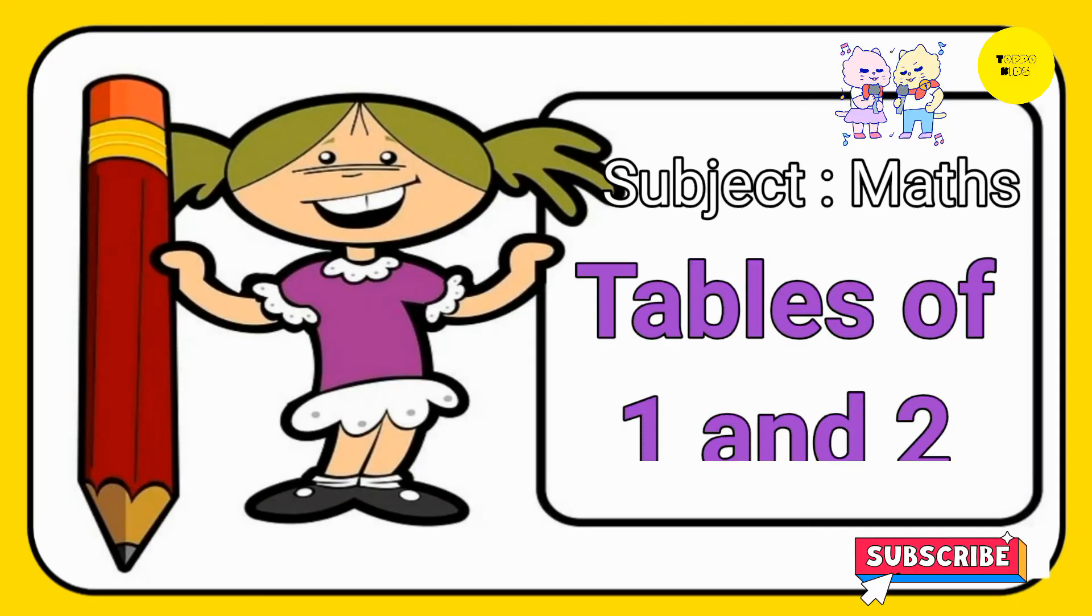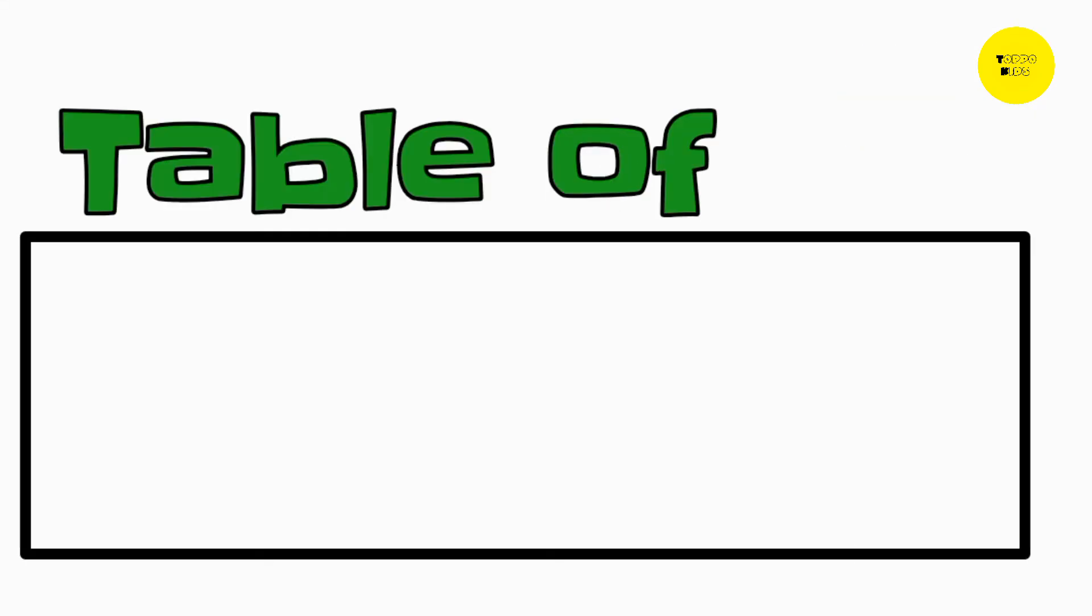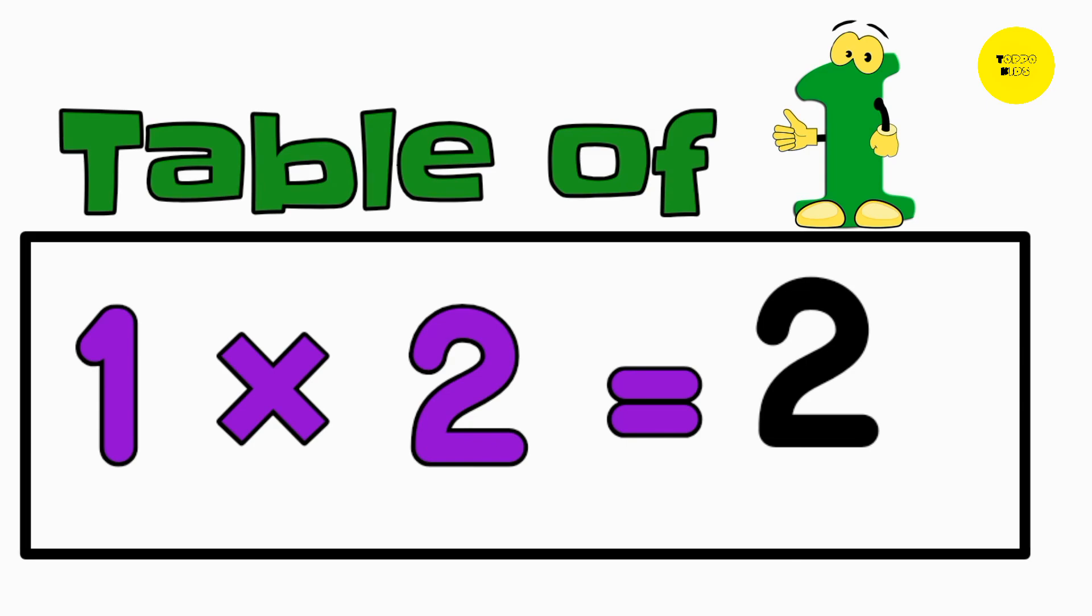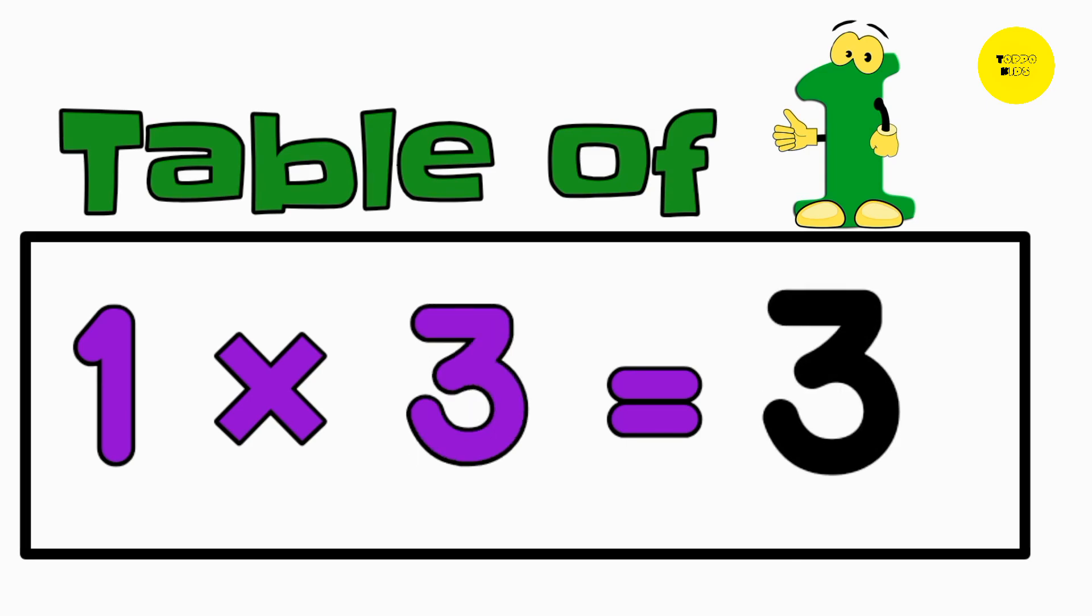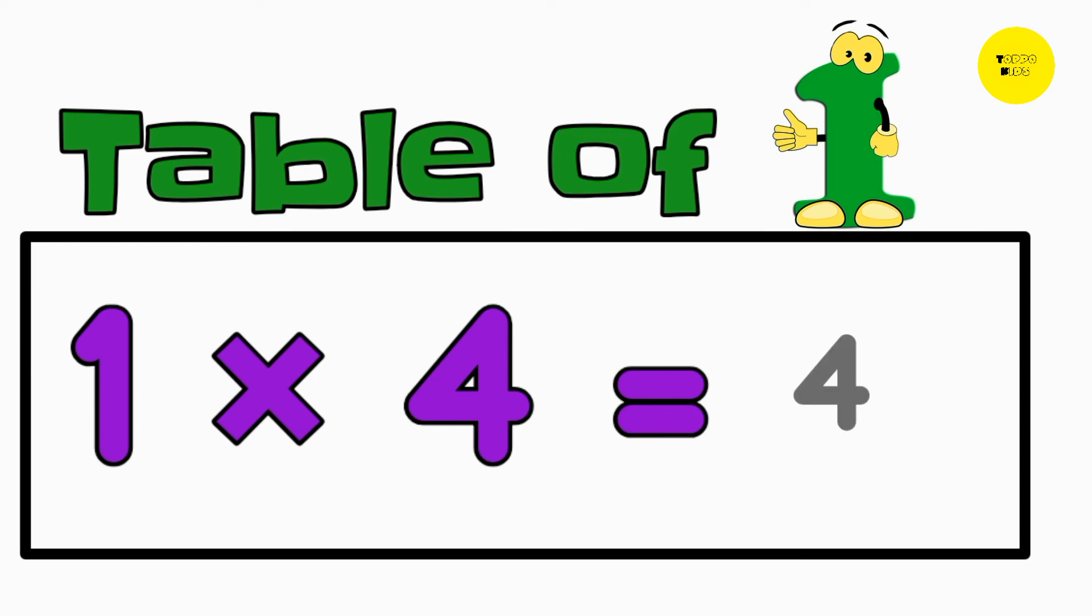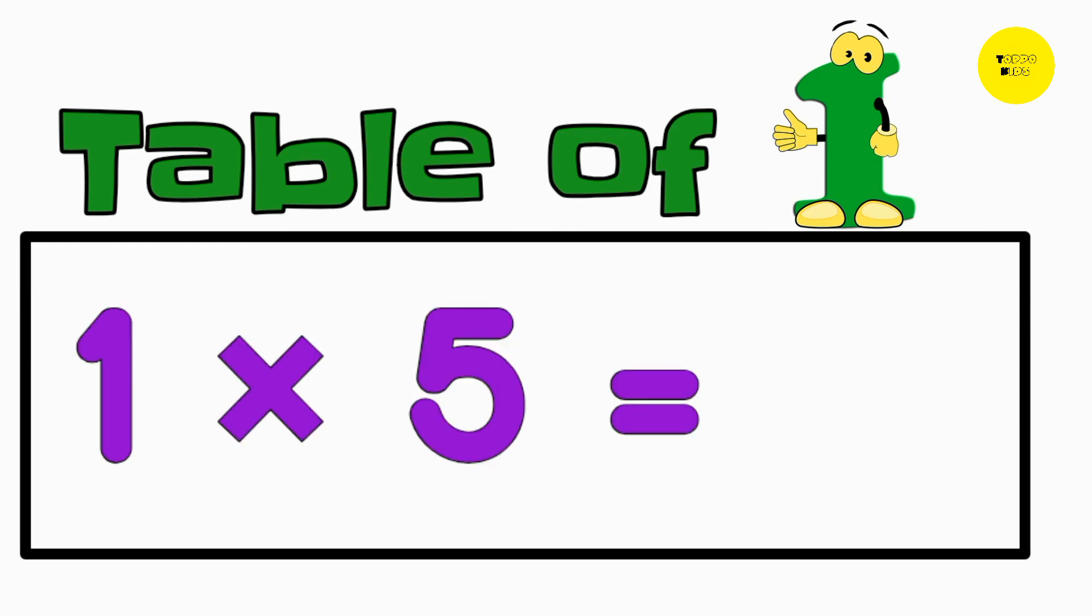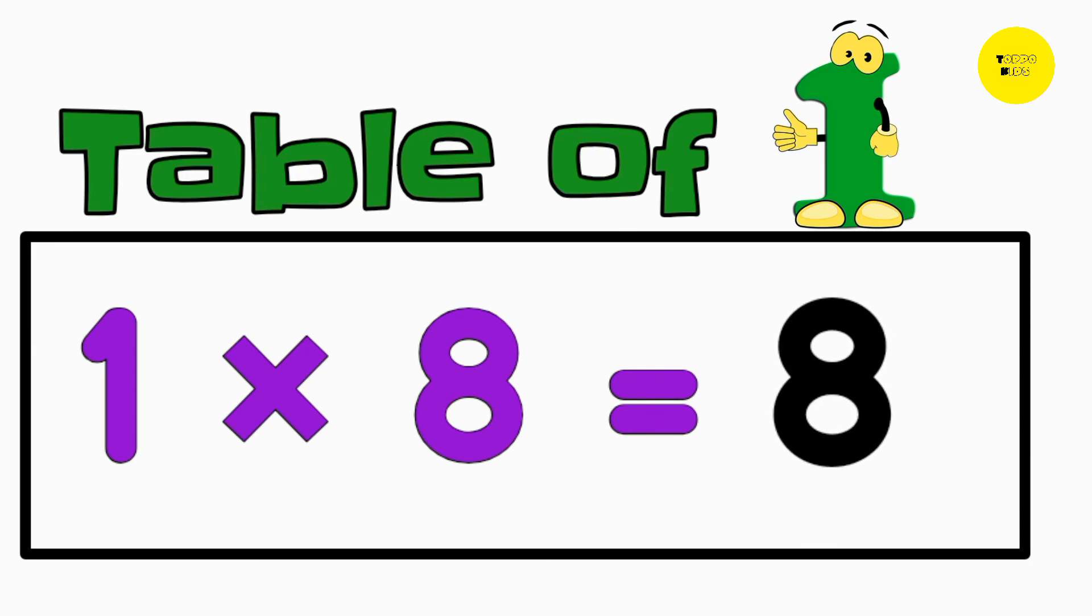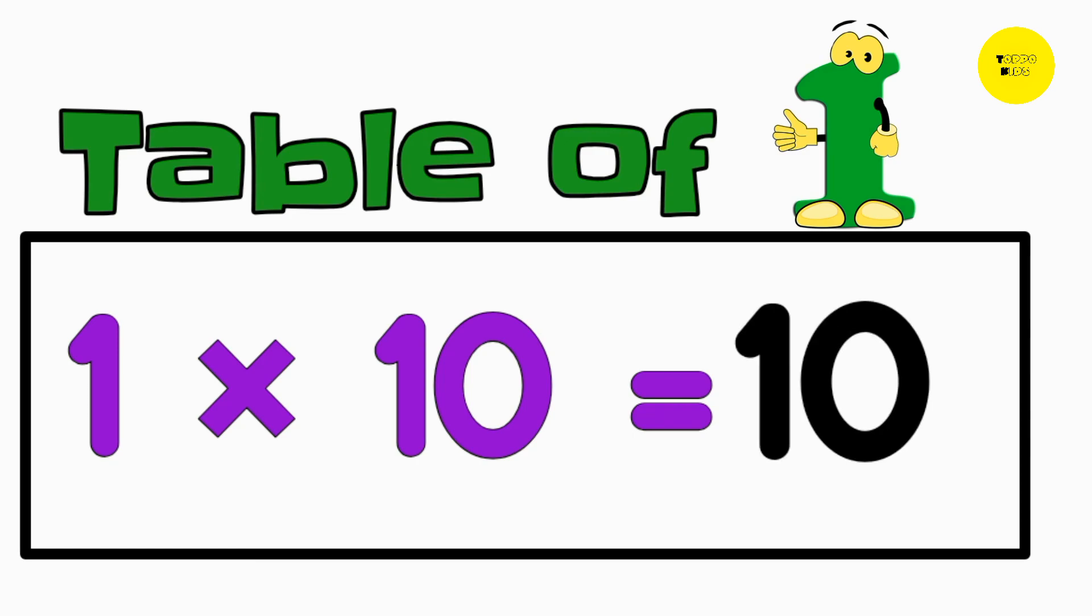Our next chapter is Tables of 1 and 2. Table of 1. 1 one's are 1, 1 two's are 2, 1 three's are 3, 1 four's are 4, 1 five's are 5, 1 six's are 6, 1 seven's are 7, 1 eight's are 8, 1 nine's are 9, 1 ten's are 10.